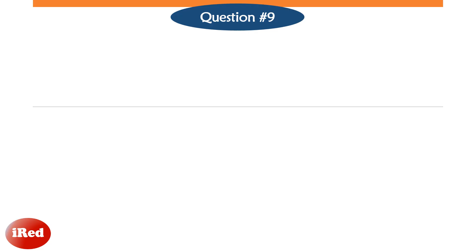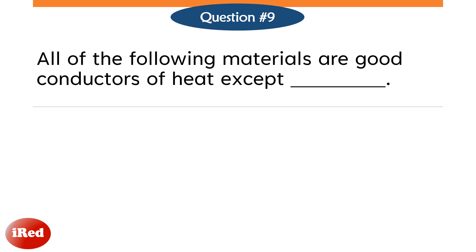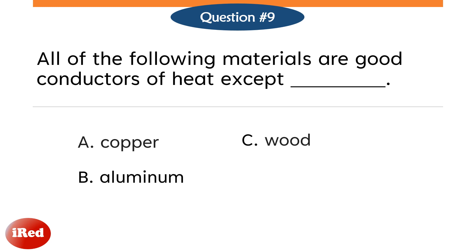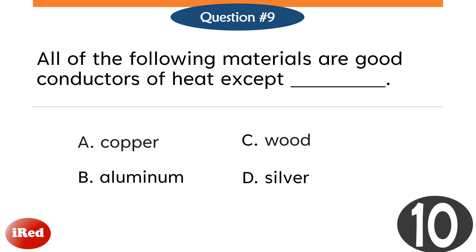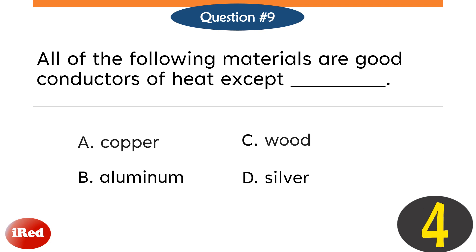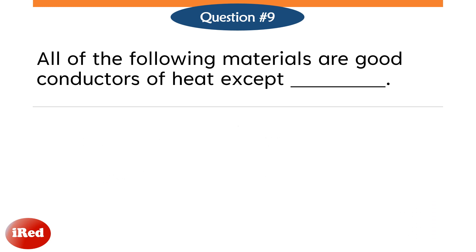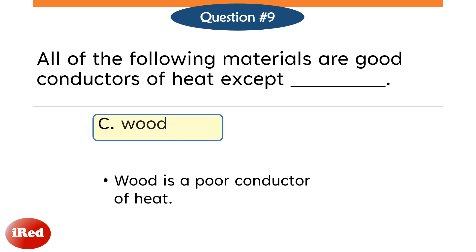Question number nine. All of the following materials are good conductors of heat except: Letter A, copper. Letter B, aluminum. Letter C, wood. Letter D, silver. The correct answer is Letter C, wood. Wood is a poor conductor of heat.